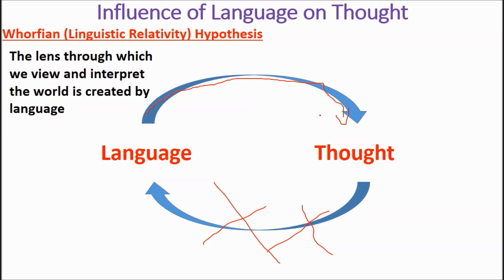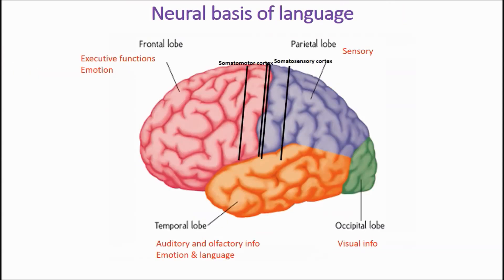There is clinical relevance here because the way we use words can perpetuate social stigmas. For example, calling somebody 'a schizophrenic' has a very negative connotation, but saying 'a person diagnosed with schizophrenia' has a more positive connotation. The way we use words matters.